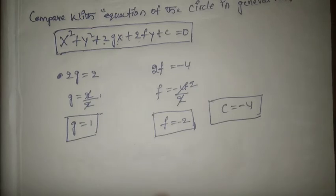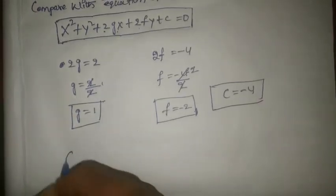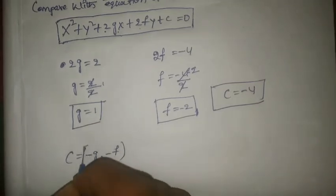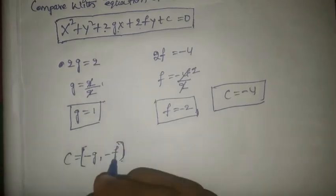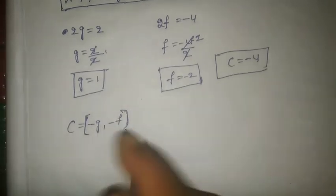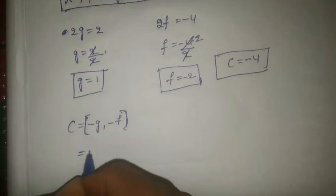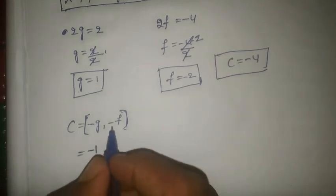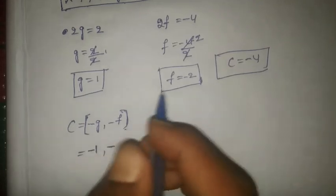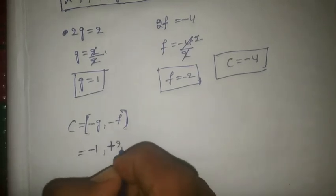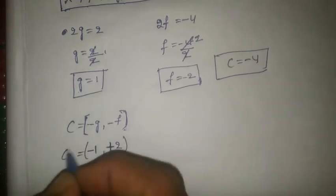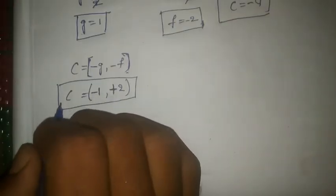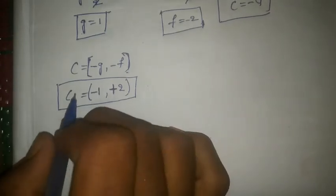Now we have found g = 1, f = -2, and c = -4. Now we have to find the center. The center in general form is (-g, -f). Substituting: g is 1 so that is -1, and f value is -2 so minus of minus 2 is +2. So the center is (-1, 2).